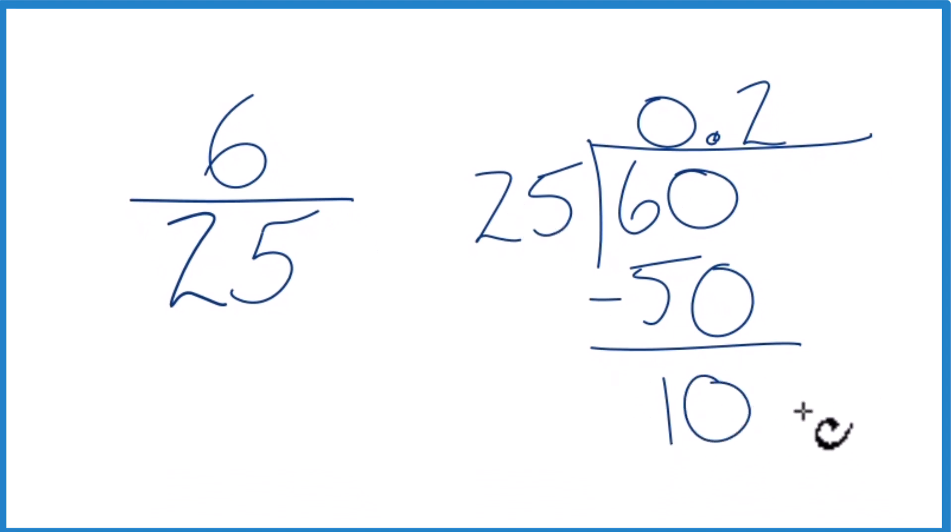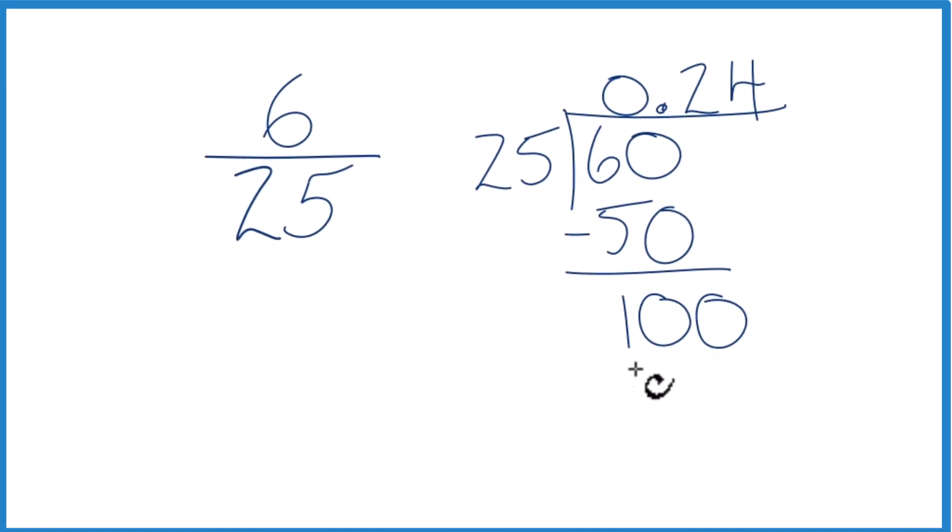25 won't go into 10, but we could make it 100 if we move over 1. And now 4 times 25, that's 100. Subtract, we get 0, no remainder.